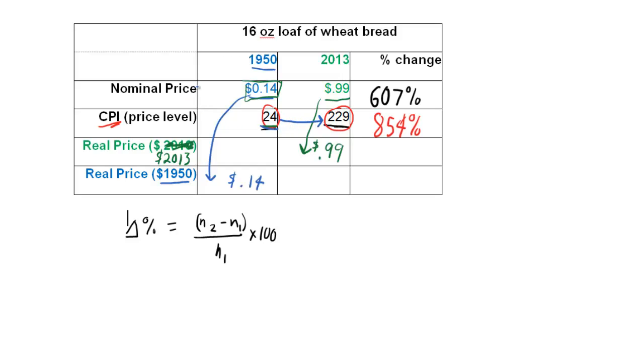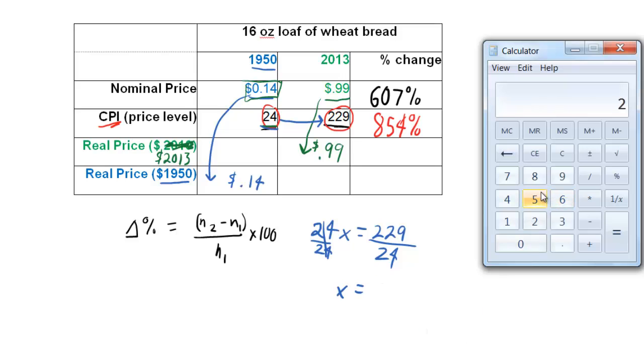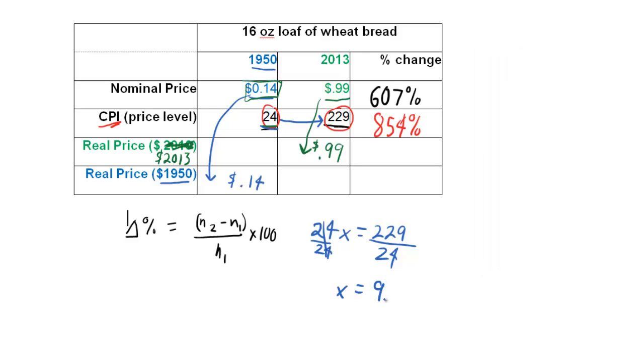We're saying what needs to happen to the old 1950 CPI to convert it to the new CPI. That's what happened to overall prices. As well, I'll do this down here. It's 24 times X equals 229. Solve for X. Divide by 24. That's 1. That crosses out. Divide by 24. X equals 229 divided by 24.